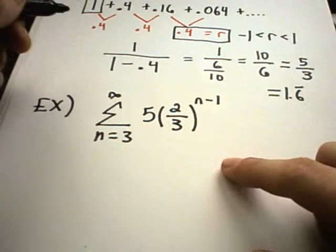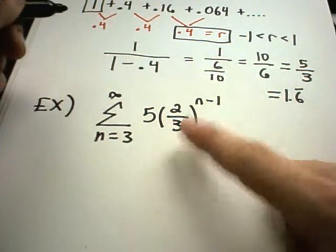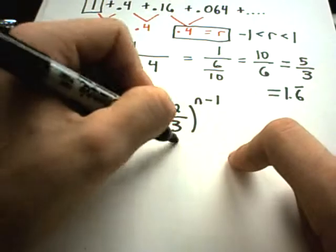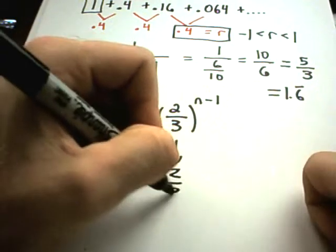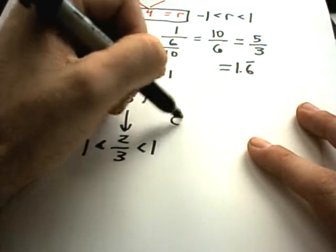Okay, so again, I look at this and I think, okay, 2 thirds. I've got a number raised to a variable power. This clues me in that it's a geometric series. Again, this number, 2 thirds, is between positive 1 and negative 1. So that means it is going to converge.